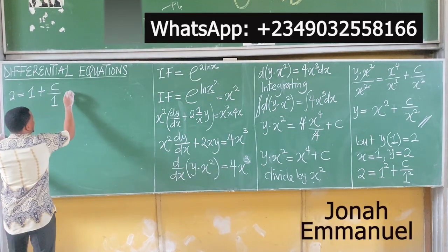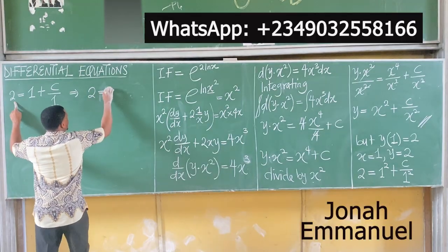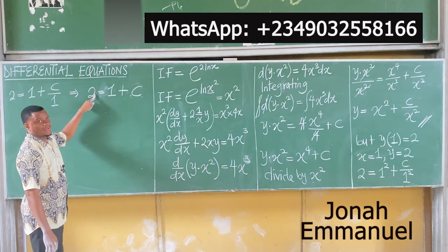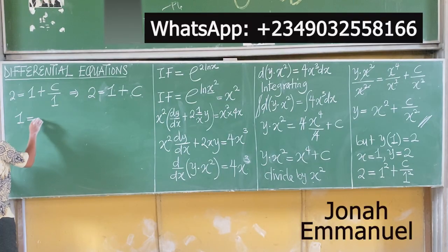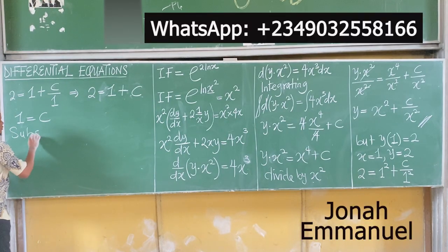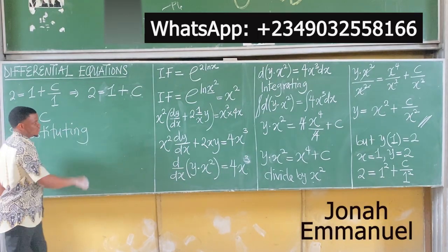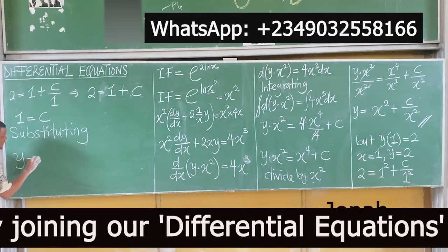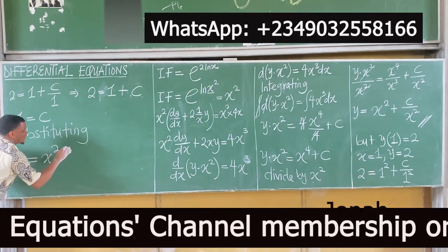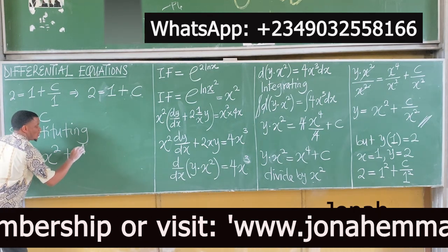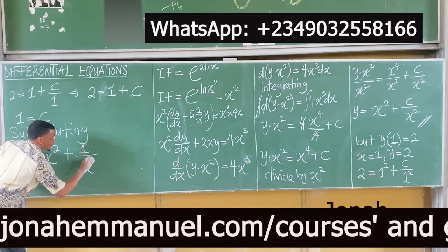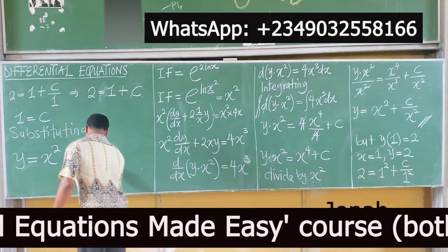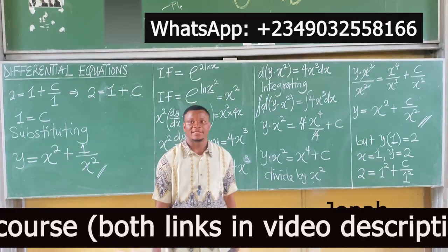Simplifying: 2 = 1 + C/1, which gives 2 = 1 + C, so C = 2 - 1 = 1. Substituting C = 1 back into the general solution, the particular solution is y = x² + 1/x². That's the answer to the question.